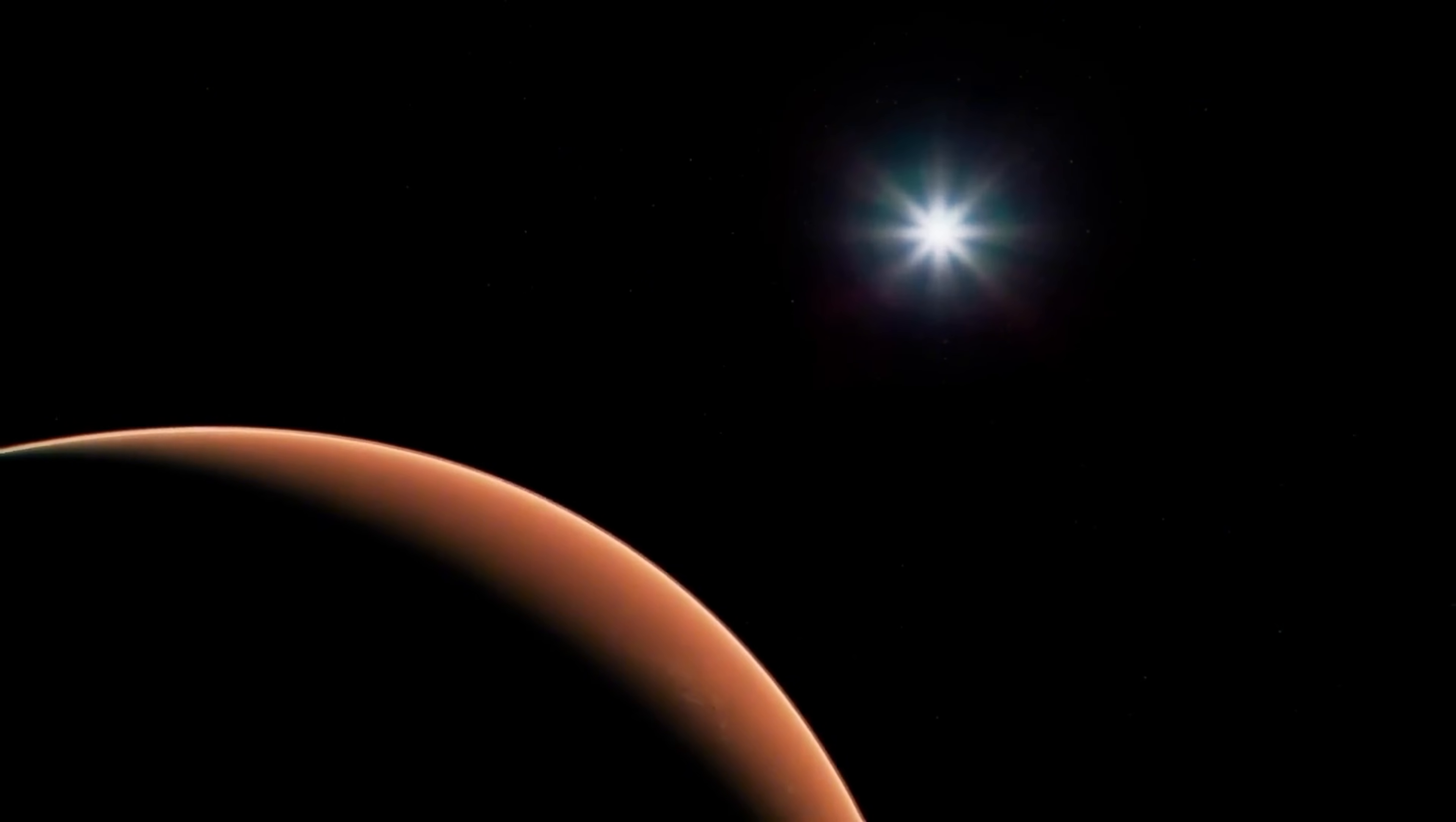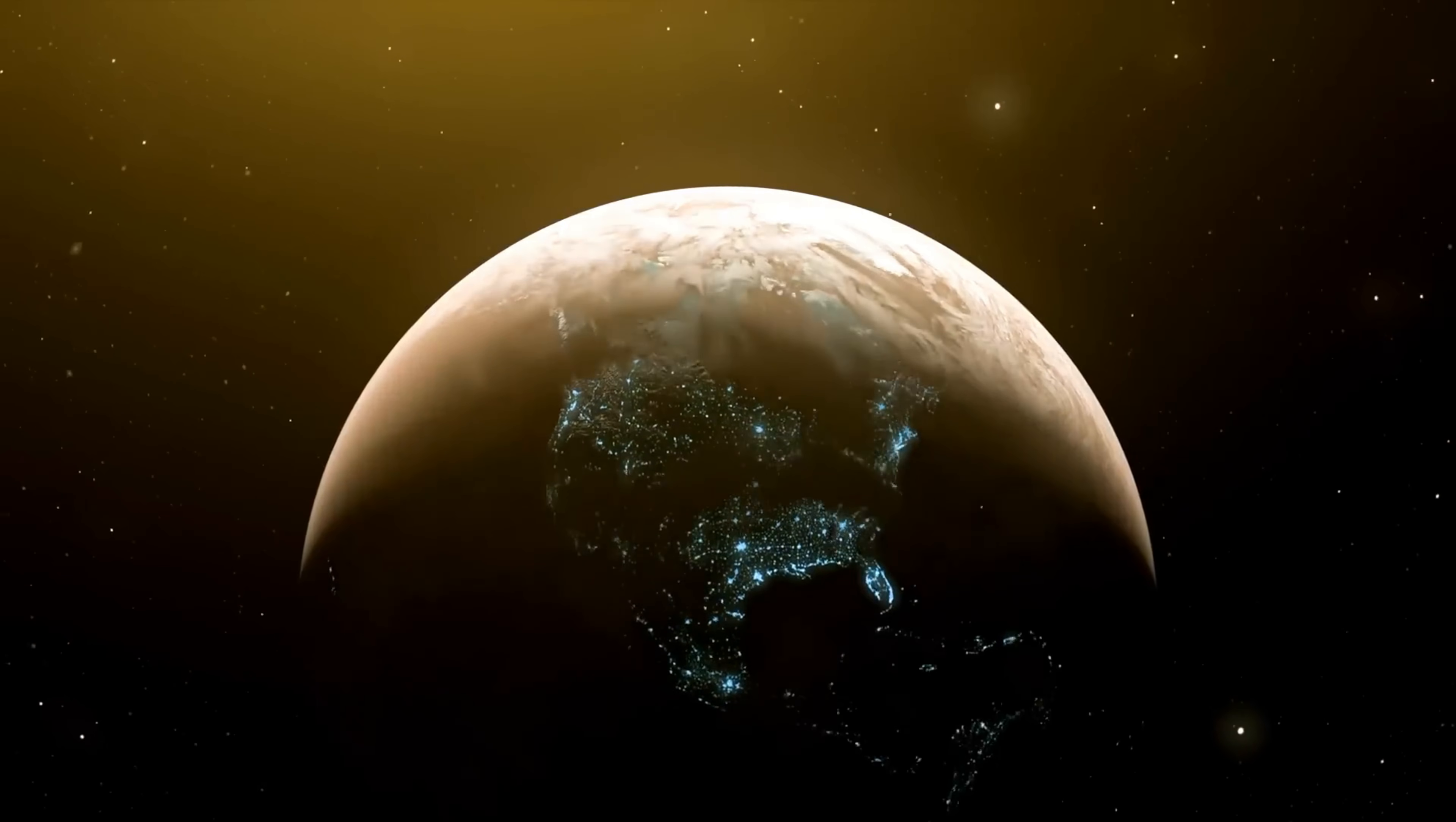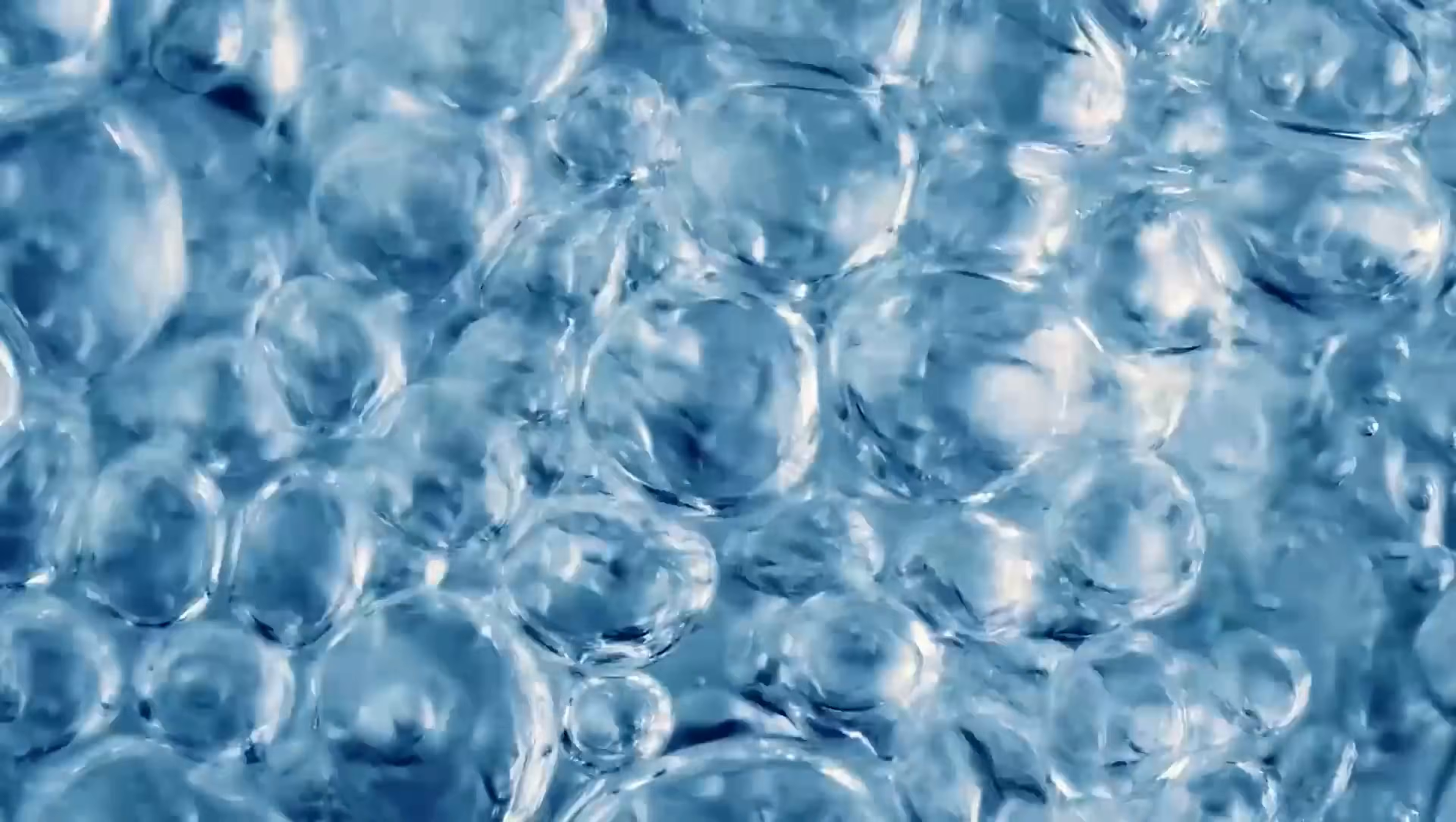However, Proxima b faces unique challenges. It's so close to its star that it endures intense solar winds, which could strip away its atmosphere. Yet, this same closeness means it could still maintain a warm enough environment for water, a crucial ingredient for life.